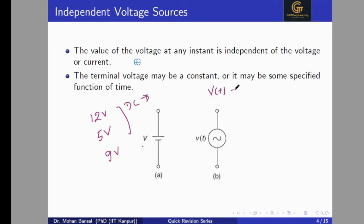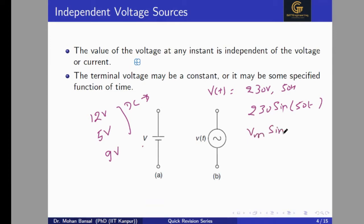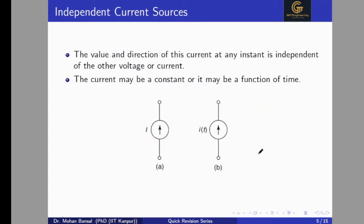For a DC independent voltage source, when we have V(t), that can be written as 230 volt 50 Hz, which means 230 sine(50t), or Vm sine(ωt). This means it is a function of time but not a function of any other voltage or current value. This is the AC voltage source which is basically used in home appliances and high voltage applications.